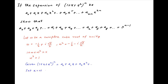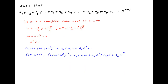Now if you set x is equal to omega on both sides, we get 1 plus omega plus omega square, whole raised to the power n, is equal to a0 plus a1 omega plus a2 omega square plus a3 omega cube plus a4 omega raised to the power 4 plus a5 omega raised to the power 5 plus a6 omega raised to the power 6 plus and so on.